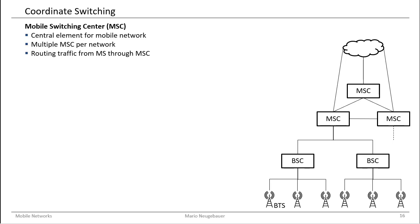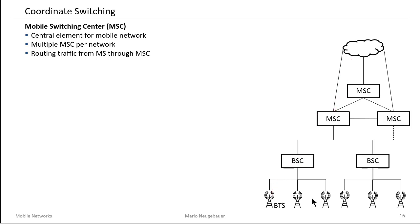Routing then means either direct routing within the mobile service provider network — from one mobile station connected to a base transceiver station, via different base station controllers and mobile switching centers to another mobile switching center, and then down to a base station controller and base transceiver station — or, in the second case, setting up a call to the outside network, the PSTN, going via the base station controller and mobile switching center into the PSTN.